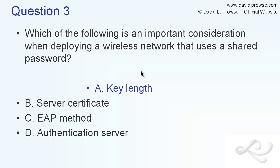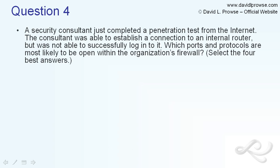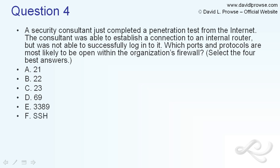Question four: A security consultant just completed a penetration test from the internet. The consultant was able to establish a connection to an internal router but was not able to successfully log into that router. Which ports and protocols are most likely to be open within the organization's firewall? Select the four best answers. The options are: port 21, port 22, port 23, port 69, port 3389, SSH, terminal services, rlogin, rsync, and telnet.